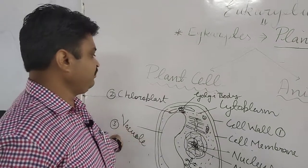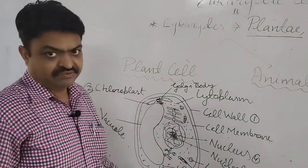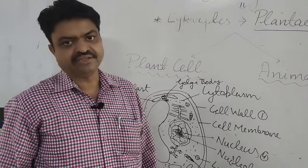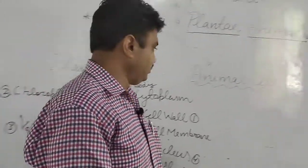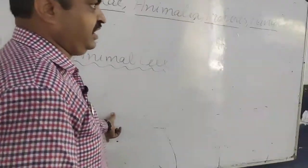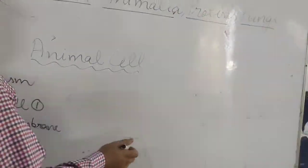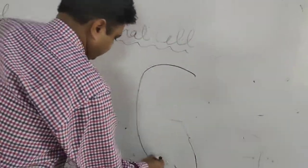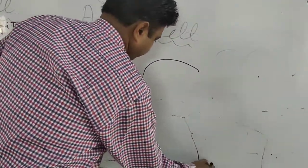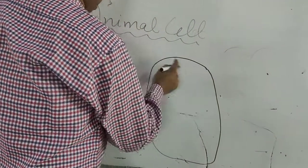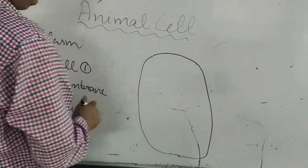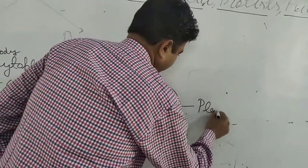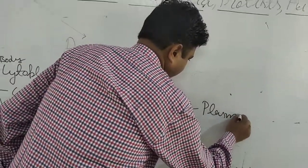Now we come to the animal cell. In the animal cell, there is only one outer covering in the form of a plasma membrane.